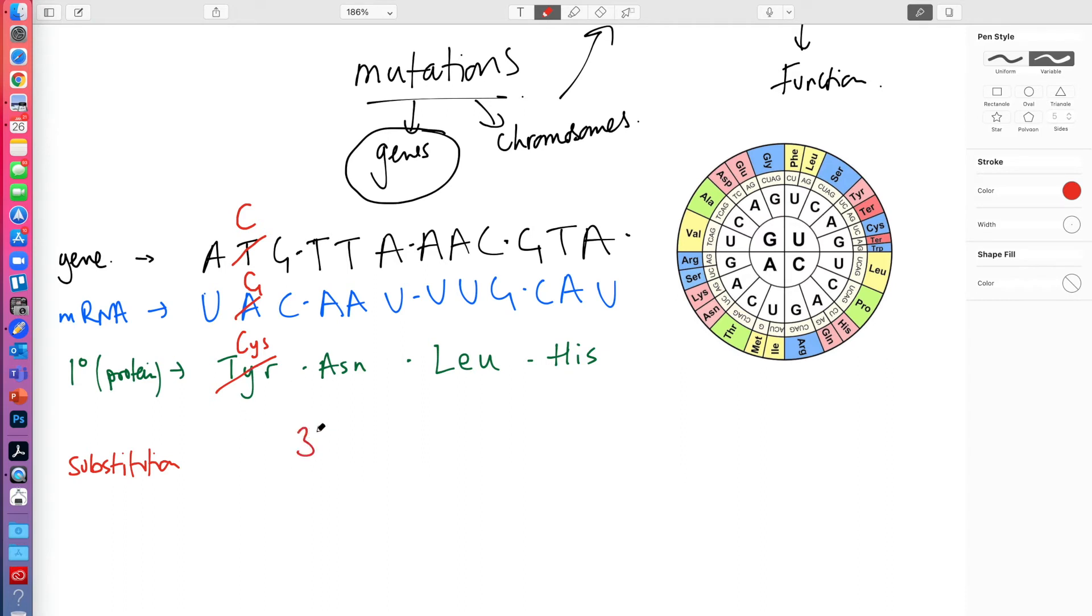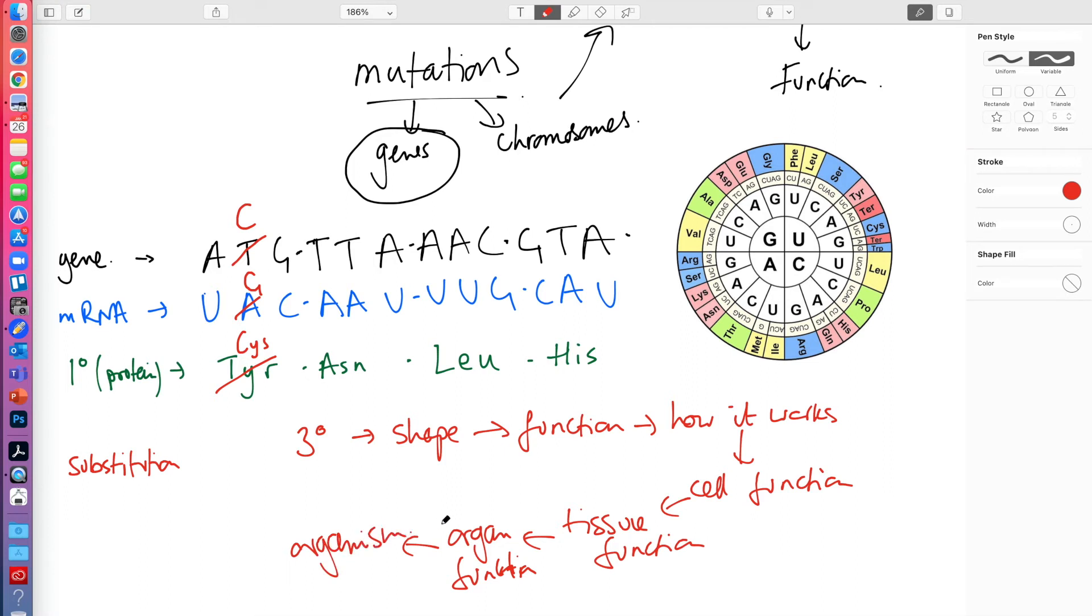So what difference does that make? Well, remember that the tertiary structure is the shape, and the shape determines the function of the protein, how it works. And how it works is crucial to the functions of cells. Cell function. And cell function is important for tissue function. And tissue function is important for organ function. And organ function is important for the functioning of the organism.